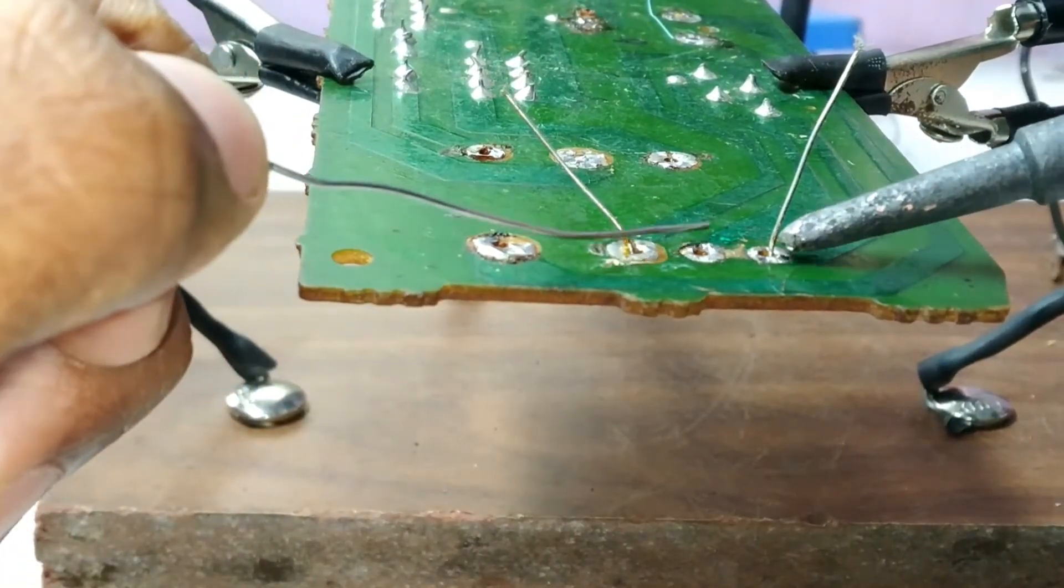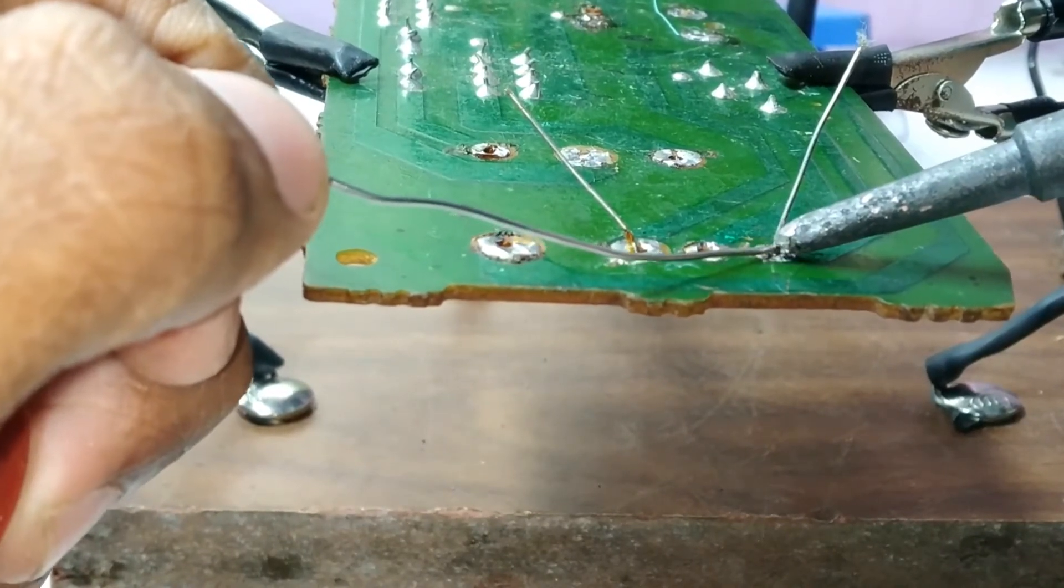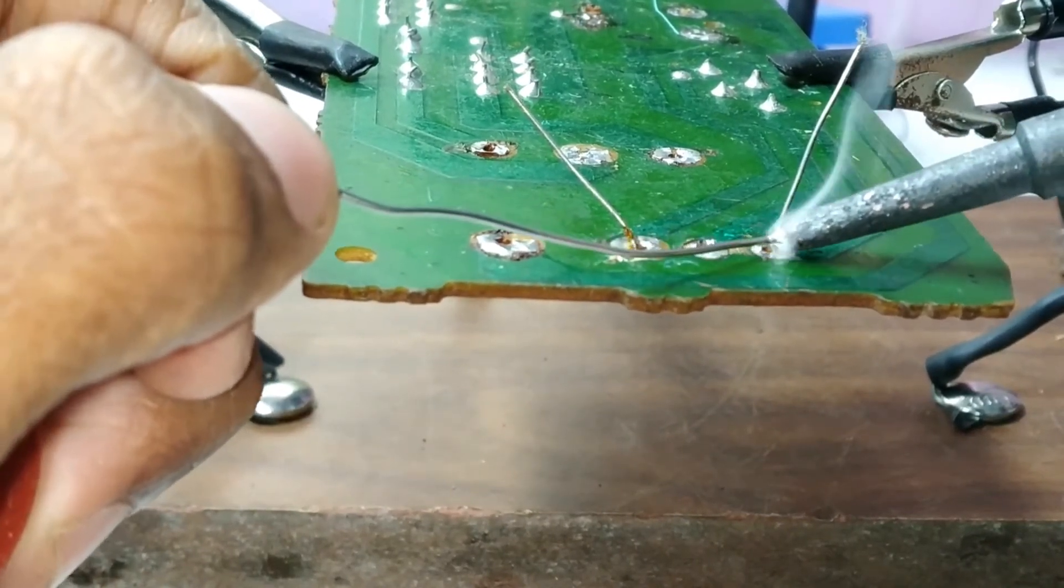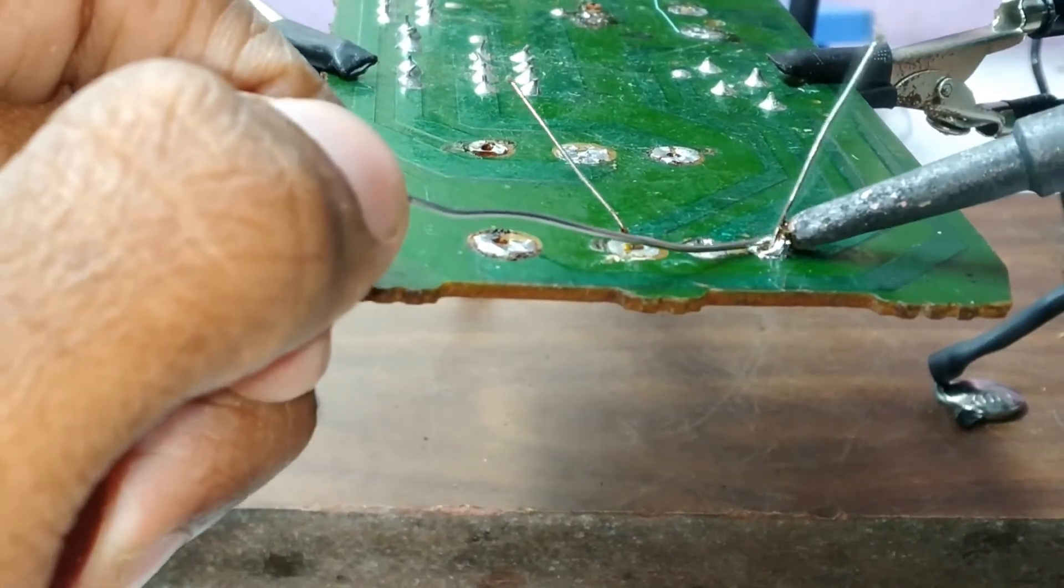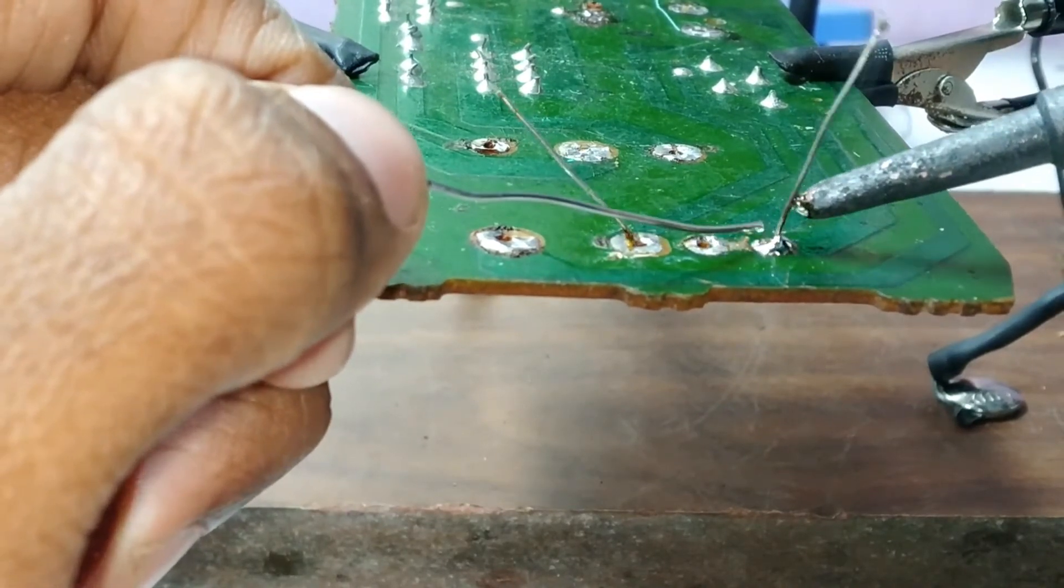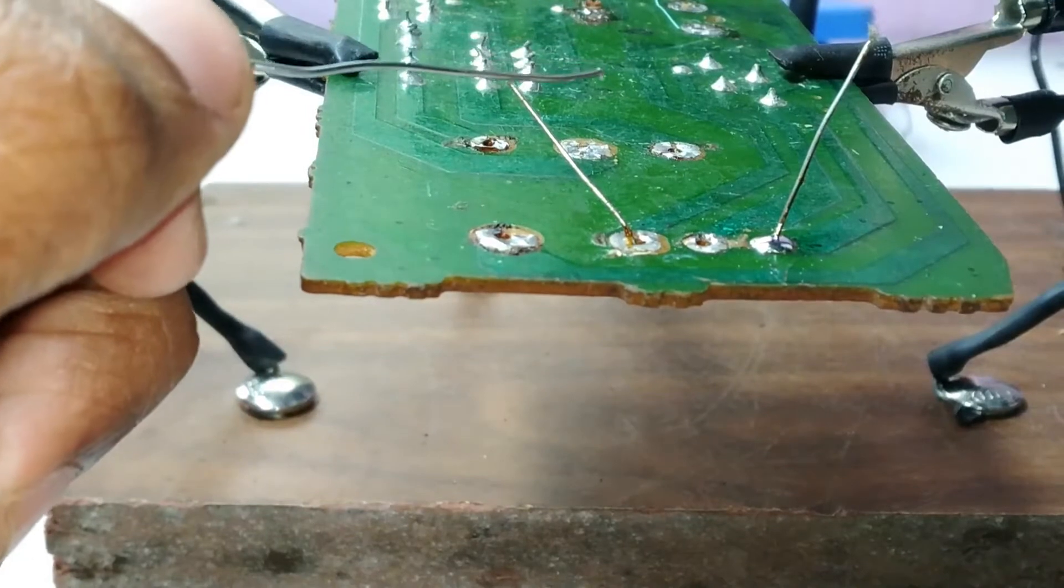Then we need to add the solder wire to 45 degrees. We need to add the solder wire to the opposite side. After remaining the solder wire we need to plug it.